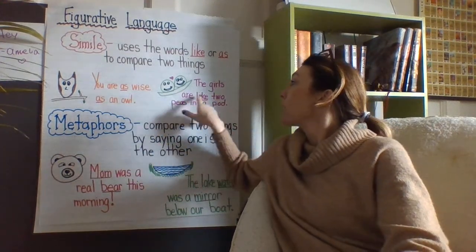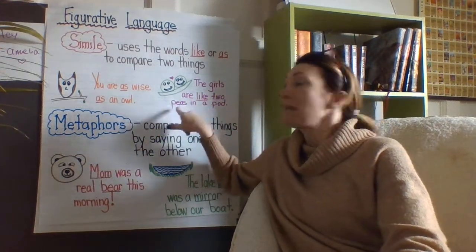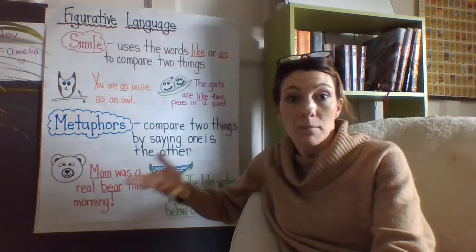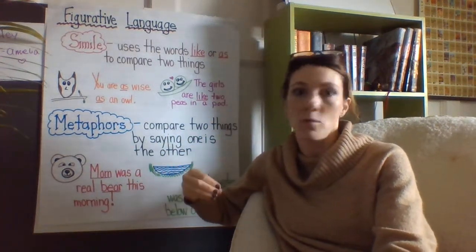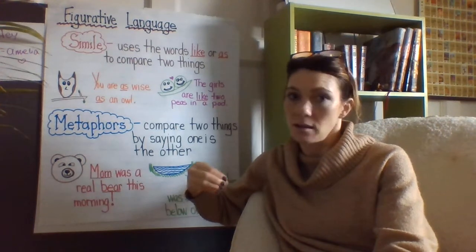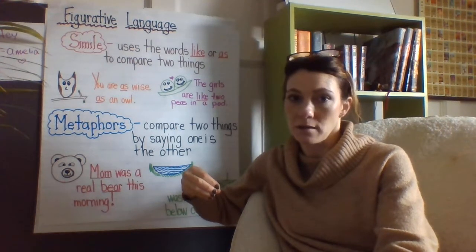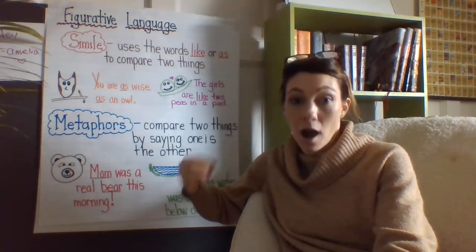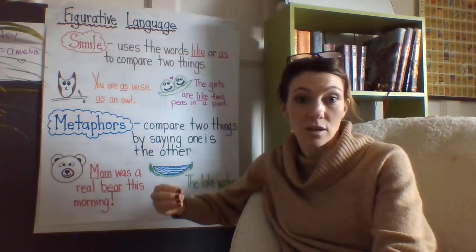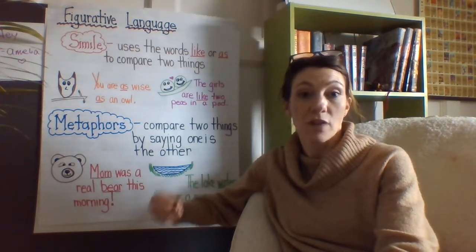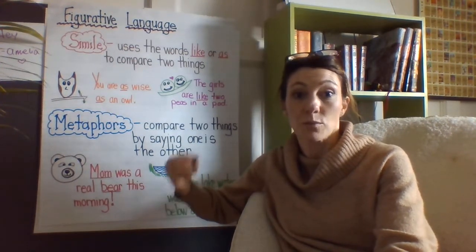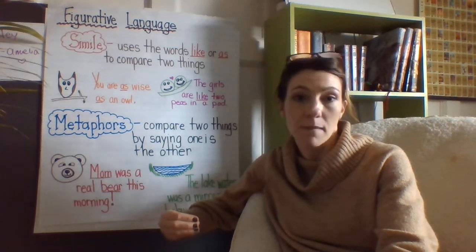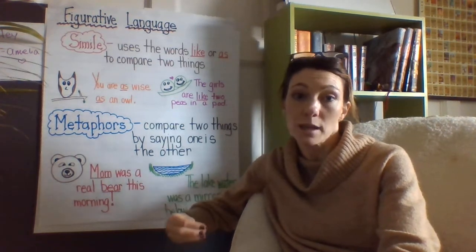The girls are like two peas in a pod. We know that peas in a pod are close together — they're always together, never apart, they look exactly alike. So these girls, you can picture their friendship as being really close. They do the same things, they like the same things, they're always together.